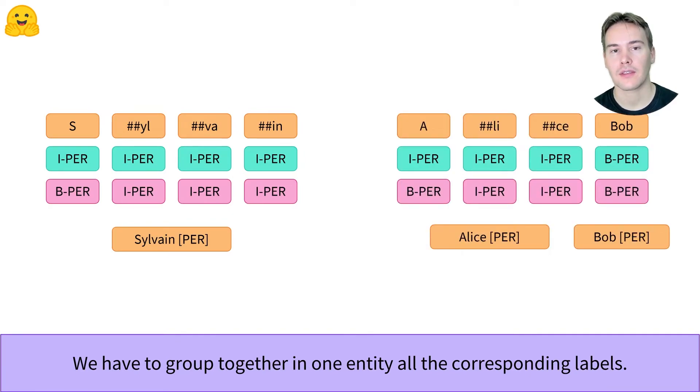One, in pink here, uses the B-PER label at the beginning of each new entity, but the other in blue only uses it to separate two adjacent entities of the same type.